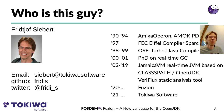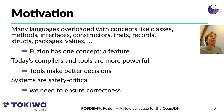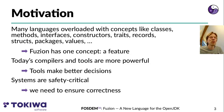A bit of background on me: I've worked a lot on languages and compilers. The motivation for Fusion is that we see more and more programming languages getting overloaded with concepts like classes, methods, interfaces, constructors, traits, records, structs, packages, values, and so on. Fusion wants to simplify this by basing the language on a single concept: that of a feature. Today's compilers and tools are more powerful than they used to be and often make better decisions than developers, so why not let those tools decide how to create the best possible programs? Also, our lives depend more and more on software, so our systems have become safety critical and we need to ensure their correctness.